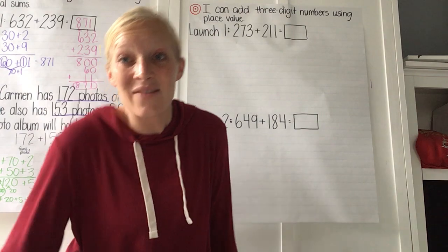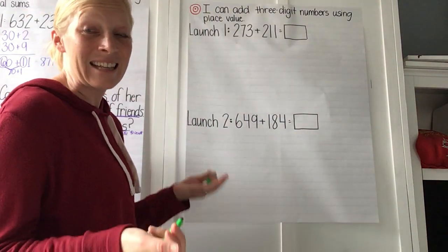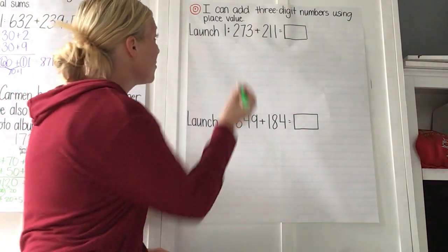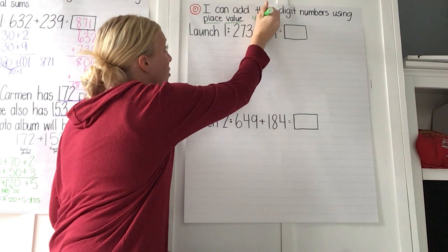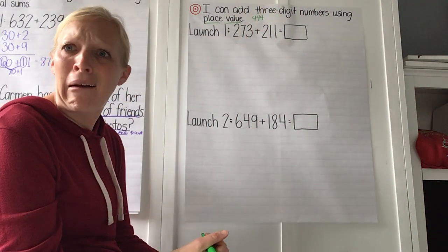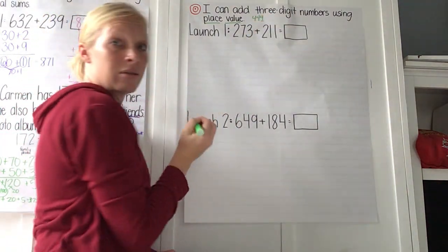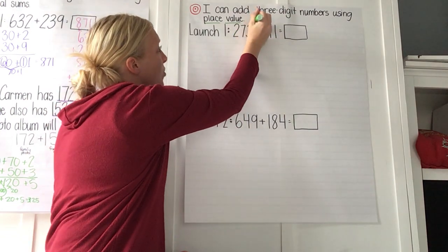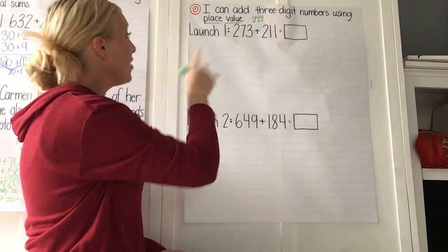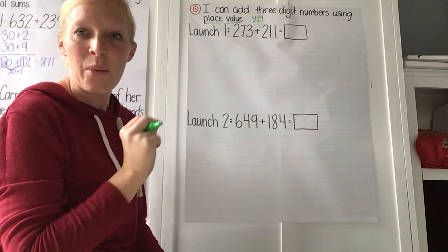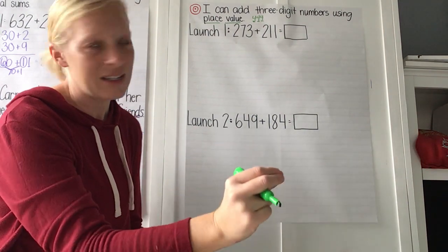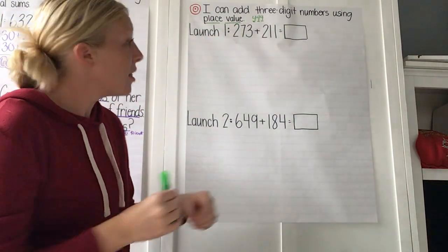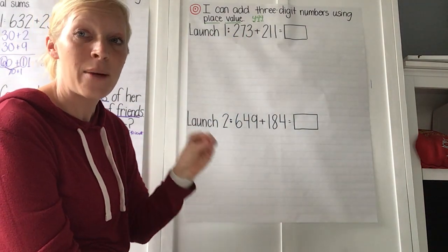Today our focus is going to be how we're seeing place value come out in each of these different strategies. Remember, when we think of place value, we know that depending on what place a digit is in, that will determine how much that number is worth. So if I have a number like 444 — they're all fours — but this 4 is worth 4, this 4 is worth 40, and this 4 is worth 400. They may all be 4s, but they're in a different place, and when they're in a different place they are worth something different. We're really zooming in on that idea.